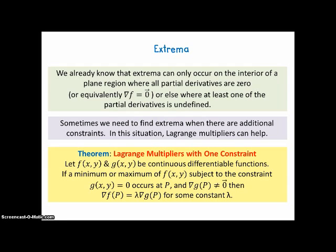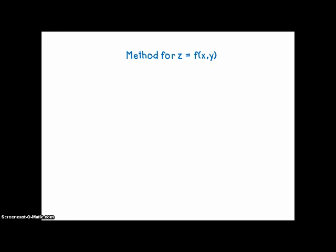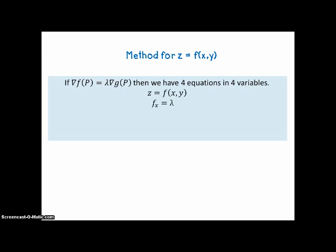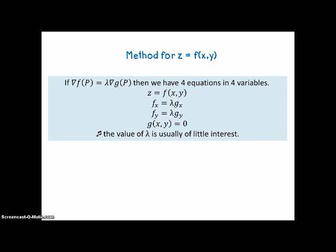For a surface z = f(x,y), if the gradient of f at p equals lambda times the gradient of g at p, then we have four equations in four unknowns: the original function equation, the partial derivative of f with respect to x equals lambda times the partial of g with respect to x, the partial of f with respect to y equals lambda times the partial of g with respect to y, and g set equal to zero. The unknowns are x, y, z, and lambda. Note that lambda is usually of little interest.